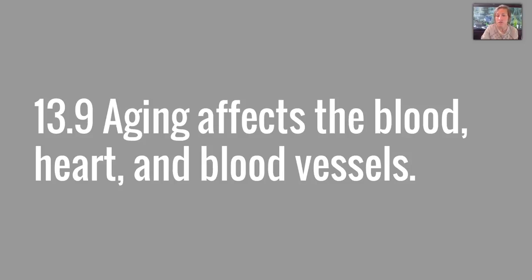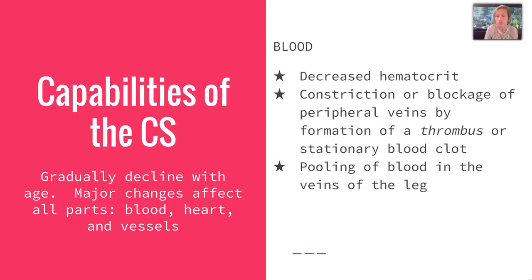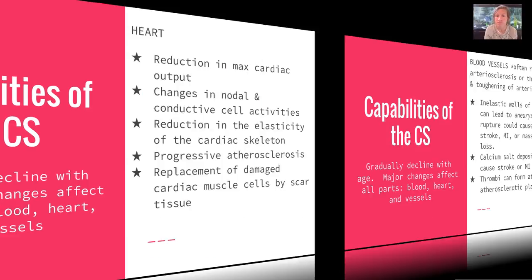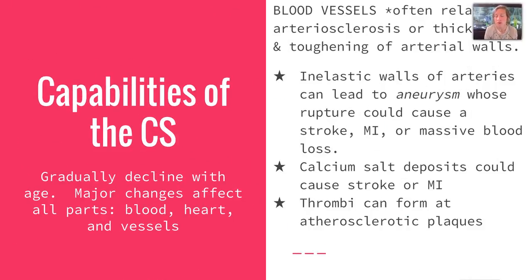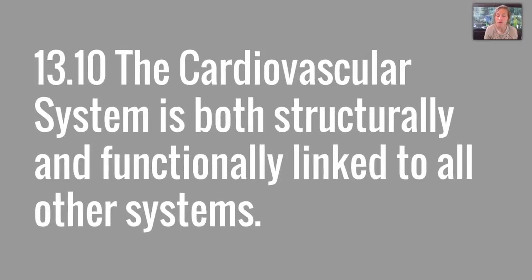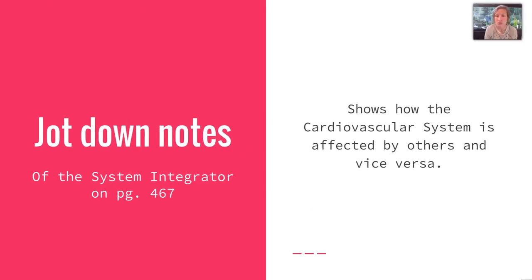Finally, section 13.9 talks about how aging affects the blood, heart, and blood vessels. The capabilities of the cardiovascular system to adjust to changes are impacted. The major changes affect all parts of the system — the blood, heart, and vessels. The next slides will cover the effects on blood first, then the heart, and then blood vessels, so pause and jot down the effects of each one. The last thing needed is section 13.10, which shows the structural and functional links to all the other systems with the cardiovascular system — jot down notes from that system integrator on page 467.